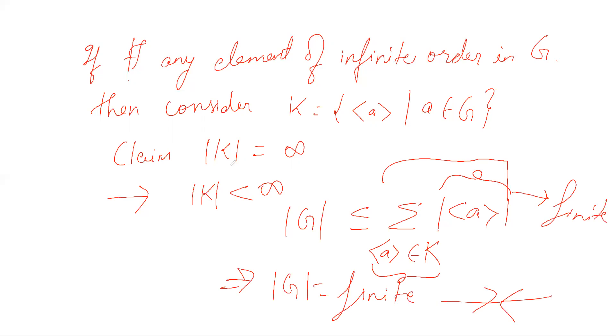Hence our initial hypothesis that K is of finite order is wrong. Therefore K has infinitely many elements and hence G has infinitely many subgroups.